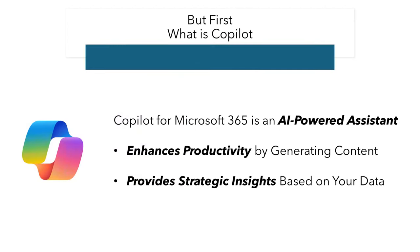But first, what is Copilot? Copilot for Microsoft 365 is an artificial intelligence-powered assistant that helps individuals work with the primary applications of Microsoft Office. In addition to that, it works in conjunction with Microsoft Teams to offer strategic insights into complex situations and provide valuable advice.